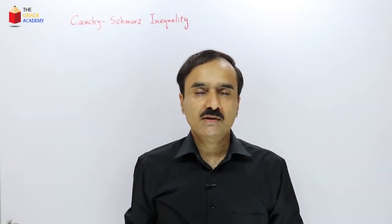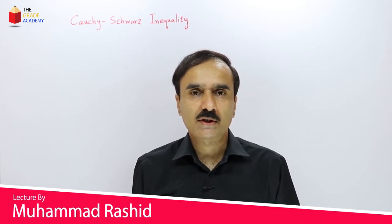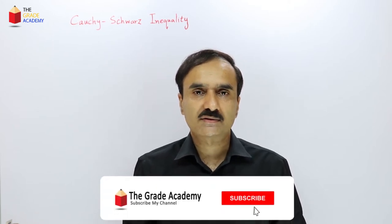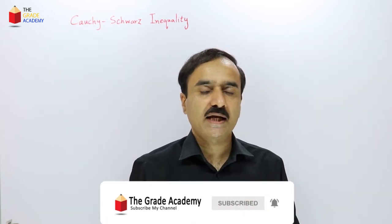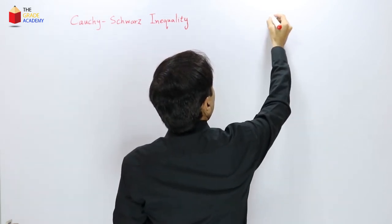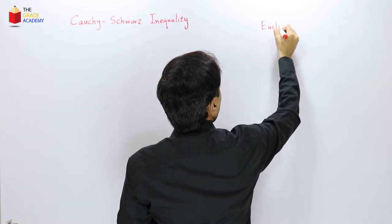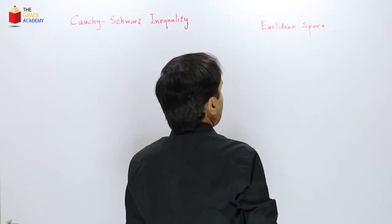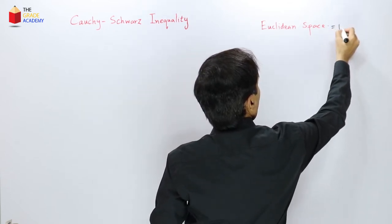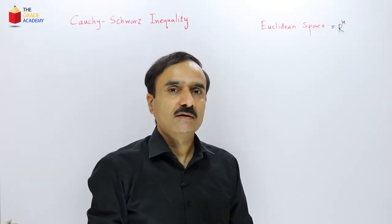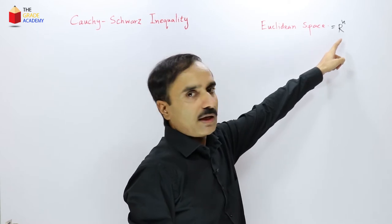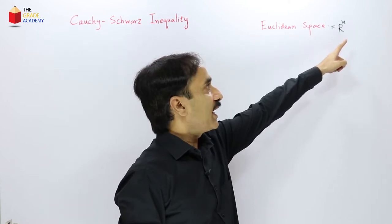Assalamualaikum students. In the previous lecture, we had an in-depth discussion on Euclidean spaces. A Euclidean space is an n-dimensional vector space, written as Rn, where n is any natural number like R1, R2, R3 and so on. The elements of a Euclidean space Rn are either vectors or points.